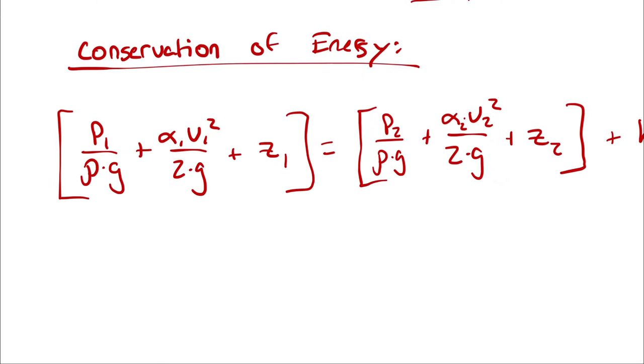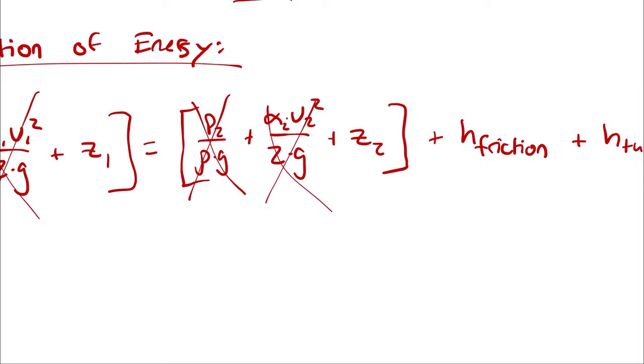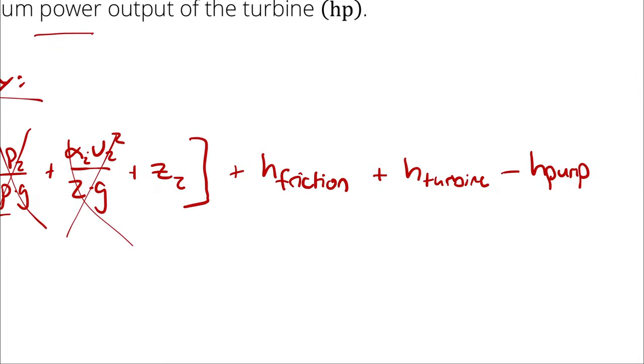So, so far, because P1 and P2 are the same, we can get rid of this term, and because V1 and V2 are the same, we can get rid of this term. That leaves me with a change in elevation, a friction head, a pump head, and a turbine head.